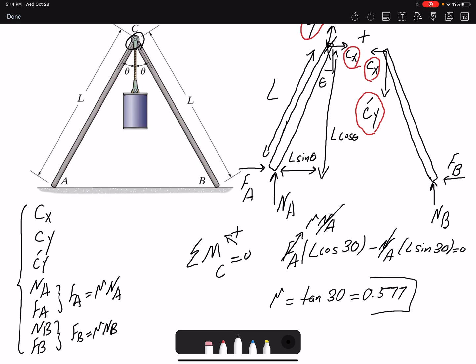So it would be 0.577. So we found the value for mu without finding the value for FA or NA, by simply writing a moment equation about point C.